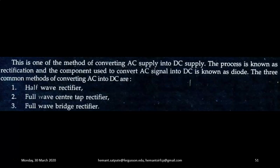The process of conversion of a bidirectional or changing polarity signal into a unidirectional signal is known as Rectification. And the device which performs this action is known as a Rectifier. This is one of the methods of converting AC supply into DC supply, and the process is known as Rectification.